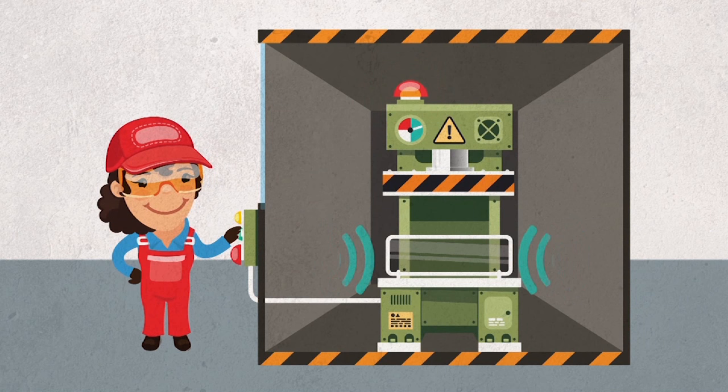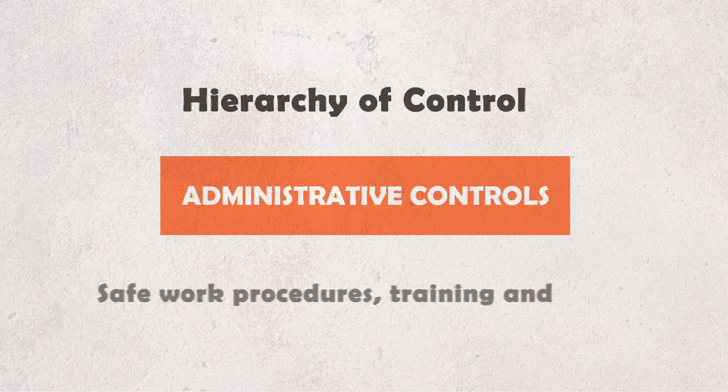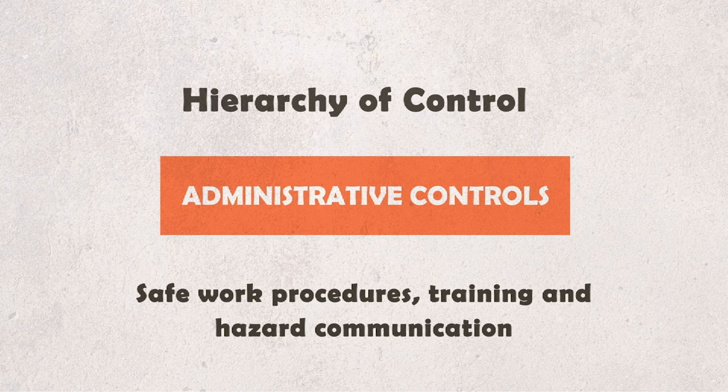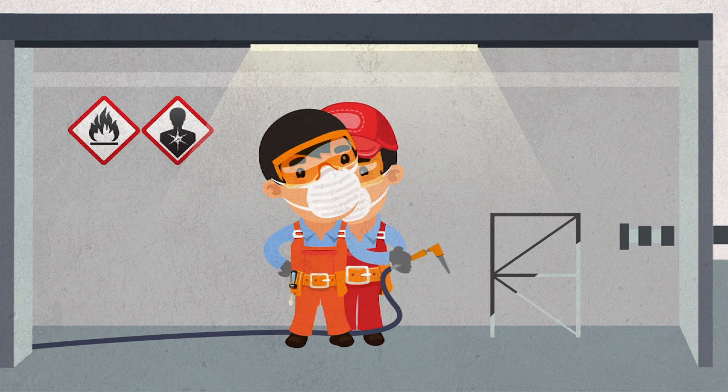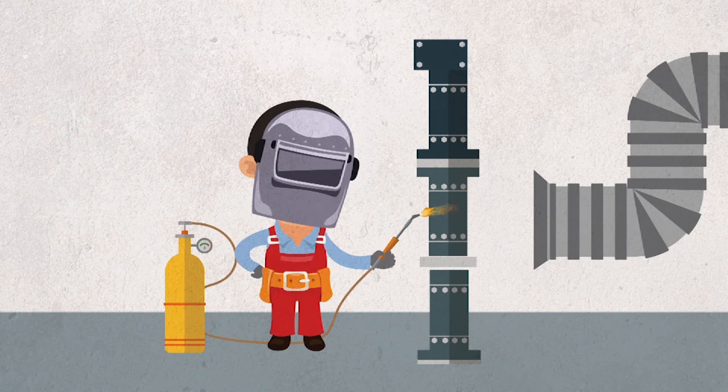Administrative controls include measures such as safe work procedures and design of job tasks, training of workers, and constant hazard communication to reduce risk. Provide workers with sufficient breaks between work tasks or job rotation to reduce exposure to risk at work.